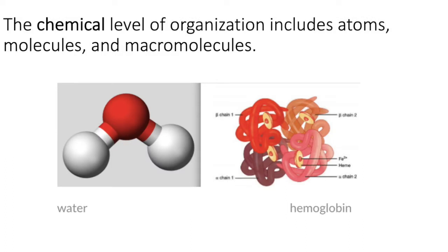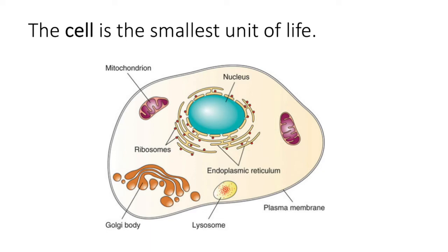So let's address each of these levels of organization. The chemical level of organization is made up of both atoms and molecules. Atoms are those single units — remember oxygen, helium, hydrogen. Here we have a water molecule, and a water molecule is made up of two hydrogens and one oxygen. So the chemical level is made up of both of these two subunits.